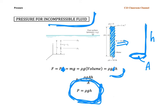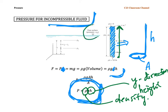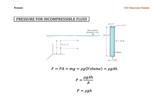The rho here is the density of the liquid, G is the gravitational acceleration, and H is the height in the y direction — the vertical distance from the point to the free surface. The free surface is the borderline where the liquid meets the atmospheric pressure. Please remember the equation for pressure in an incompressible fluid is P equals rho g h.